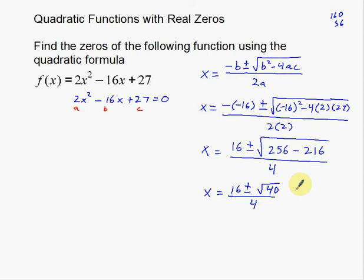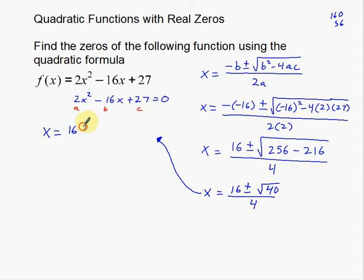We will be able to get some exact answers here — we won't get numbers like 5 and negative 17 — but we do need to reduce this square root of 40 first. Now 40 is 4 times 10, so I'm going to reduce that to plus or minus 2 root 10. You can split that up into the square root of 4 and the square root of 10. The square root of 4 is 2, and the square root of 10 we just leave there. And then divided by 4.